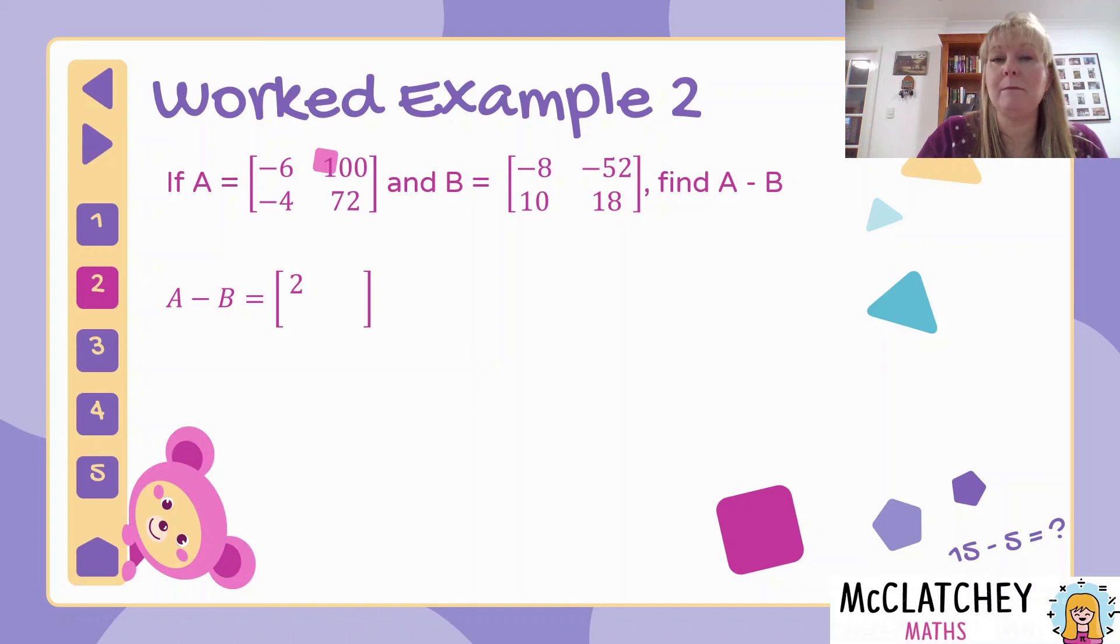And then we're going to move to the next column over and look at element number 12. And that is a hundred take away negative 52. So that becomes plus, and we've got 152. Let's move down to the bottom on the left-hand side. That's element number 21. We've got negative four minus 10 gives us minus 14. And then the last one is 72 take away 18 gives us 54. And that's about as hard as it gets.